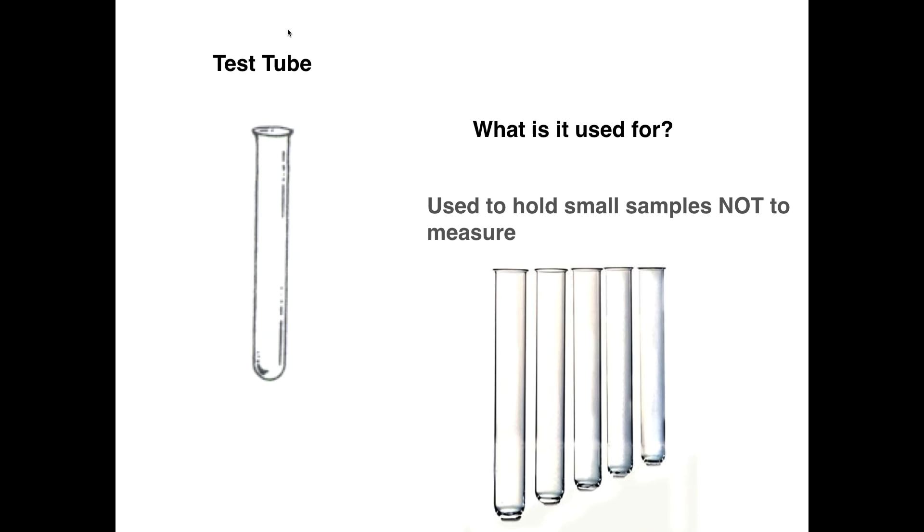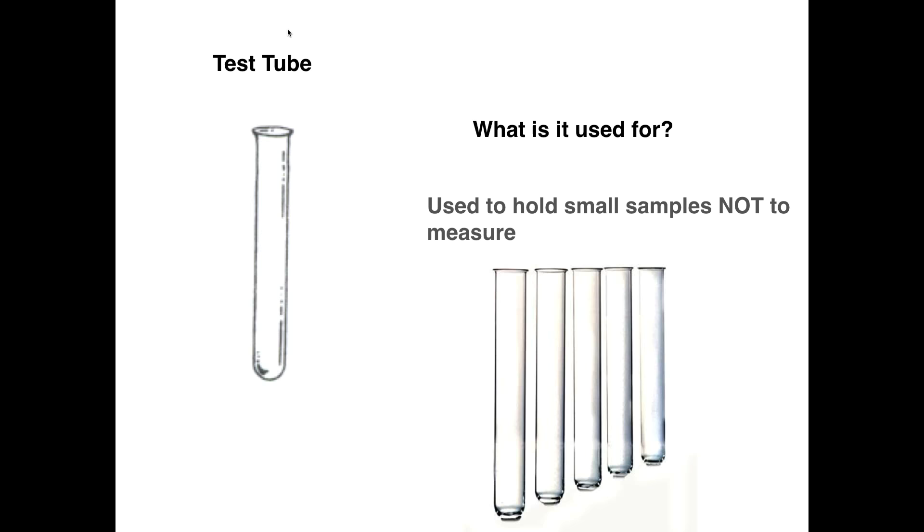Test tubes. Test tubes are used to hold tiny little samples of things, and again, they are not used to measure things. Notice that in neither of the pictures on the screen right now, you see little lines. There are no little lines, which means that those test tubes cannot tell you how much there is inside of it. Sometimes you'll see a number on a test tube that'll let you know this holds 10 milliliters. But that doesn't mean there's a line that lets you know where the 10 milliliter mark is. That's why we just use test tubes generically to hold on to small samples of things, and we don't use them to measure things because that would not be useful for us.